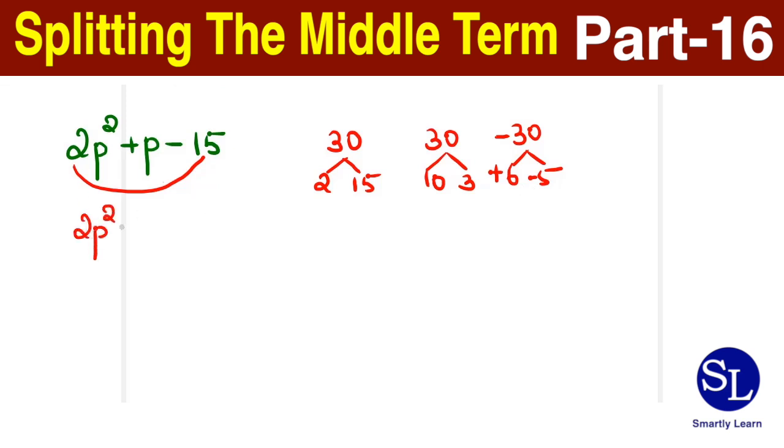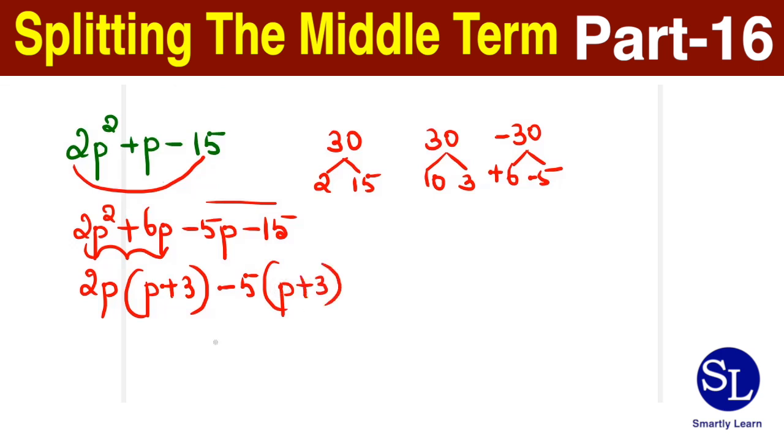Now let's split the middle term. 2p squared plus 6p minus 5p minus 15. Between the first two terms, take the 2p outside. So it is 2p into p plus 3. Between the last two terms, take minus 5 outside so that you get a p plus 3.